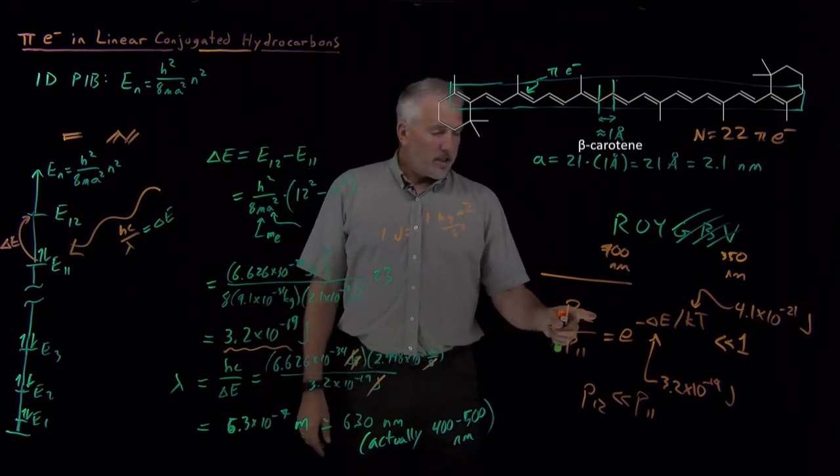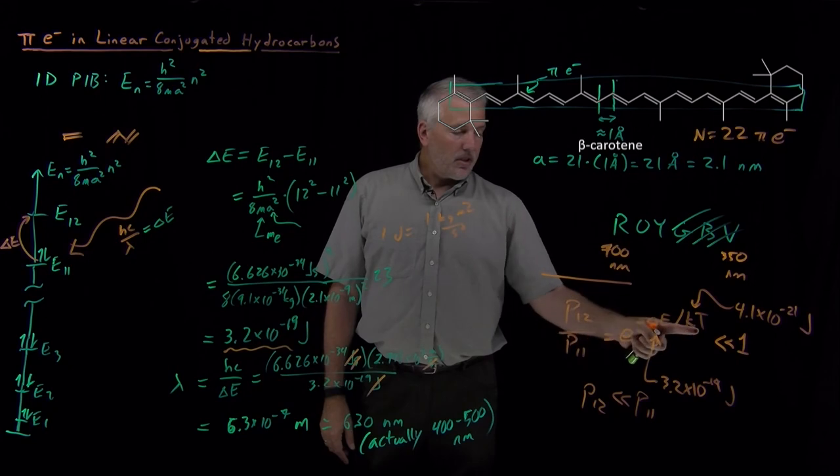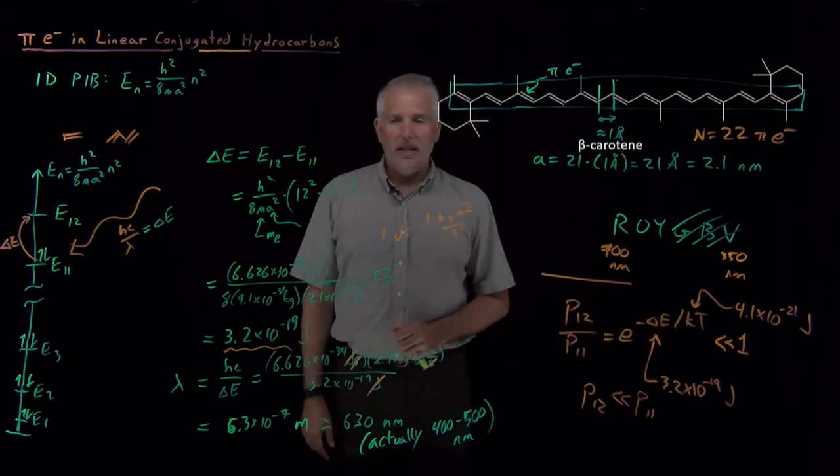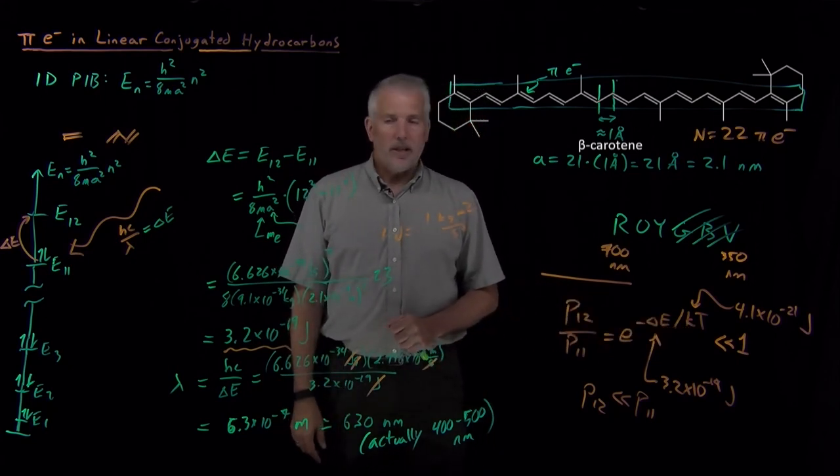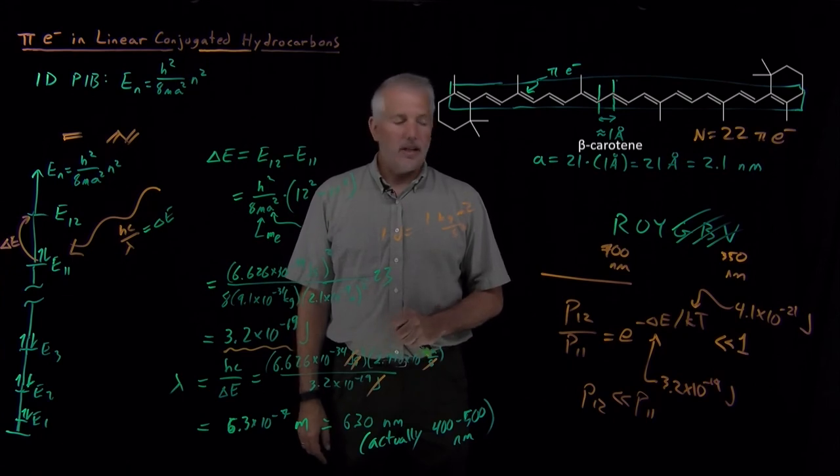All right, so we're going to continue next and explore this ratio of delta E compared to kT a little bit more and see what that can tell us about energy levels that are occupied in molecules other than just beta carotene.